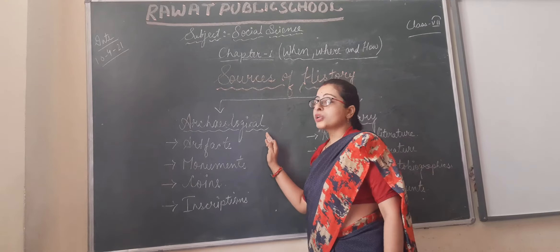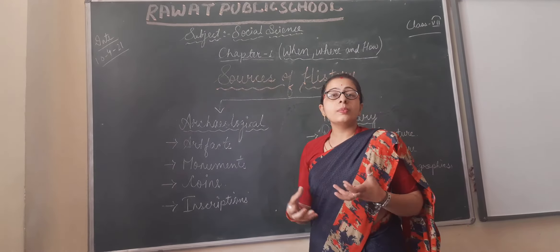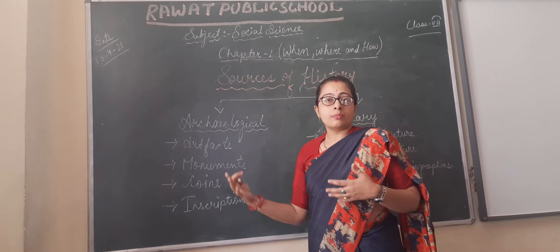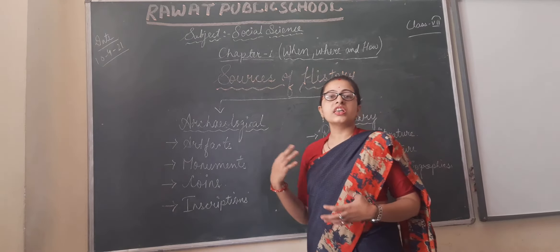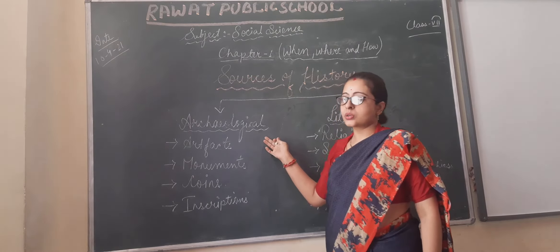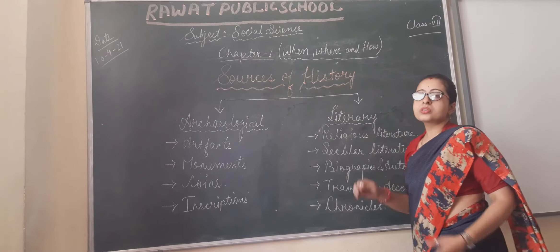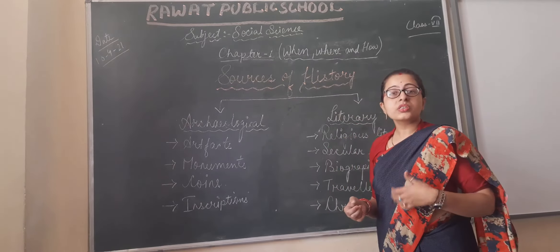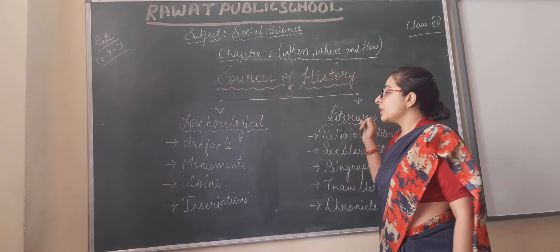Archaeological sources are those sources from the remains and other materials which are left over by our early man — the information we get from that is called archaeological sources. Literary sources are those sources which are in written form; the sources which are in written form are called literary sources.